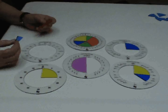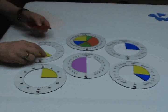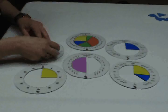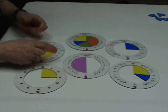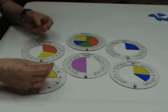Extensions using the circles include the use of fraction rings, which incorporate the concept of time, conversions to decimals and percents, as well as applications to circle graphs.